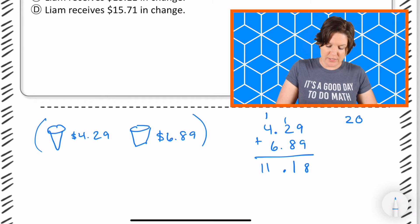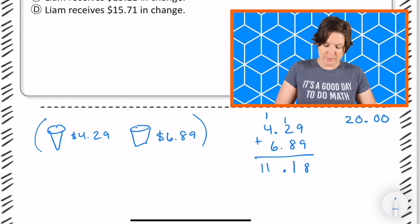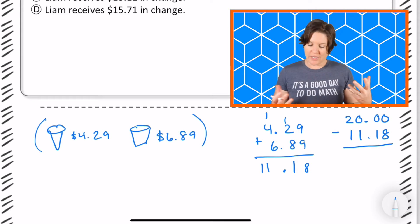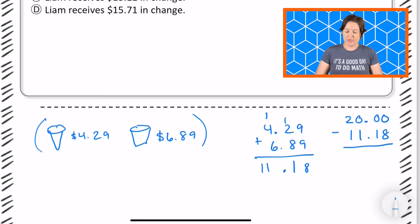Okay so $20 can be written like this. Subtract our amount of $11.18, that's the cost of the cone and the milkshake. And we have quite a few zeros here so I'm gonna go ahead and regroup.